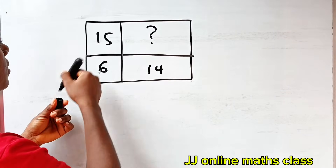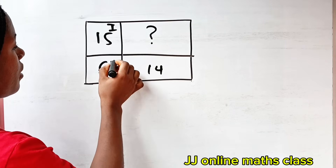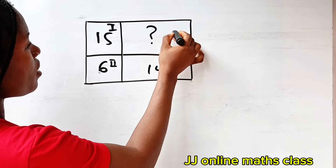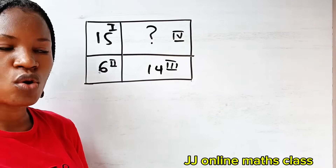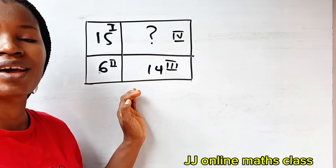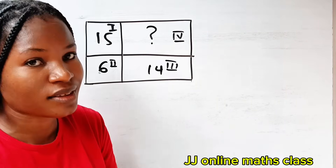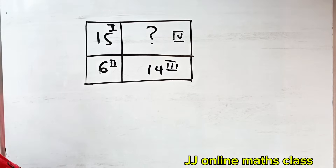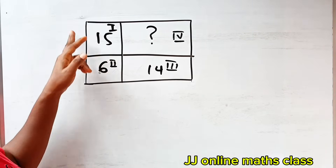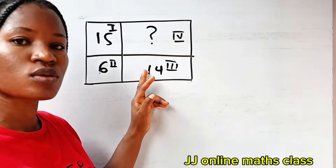Let's label the four sections as I, II, III, and IV. So we are looking for the area of section IV. Remember that this is not a square — this is supposed to be a rectangle. Each of the four inner regions is also a rectangle.